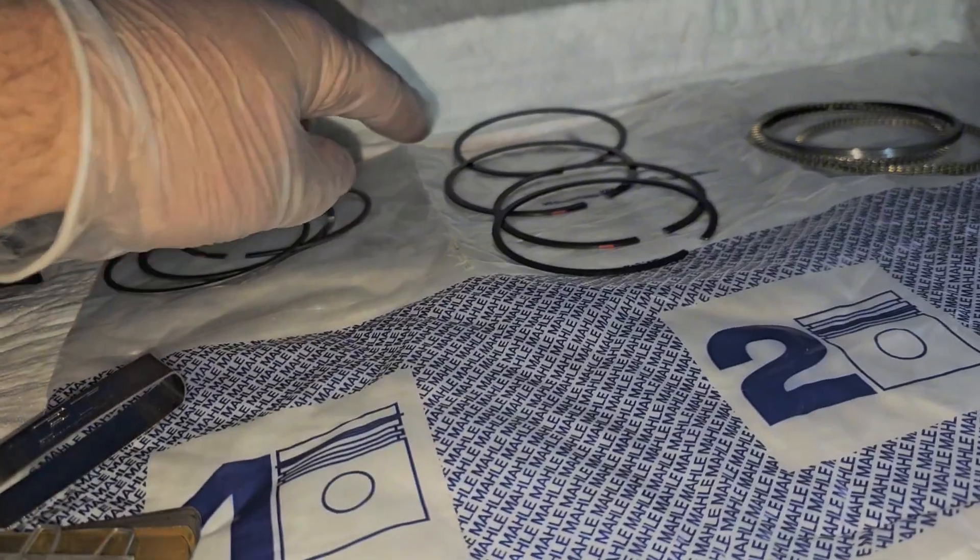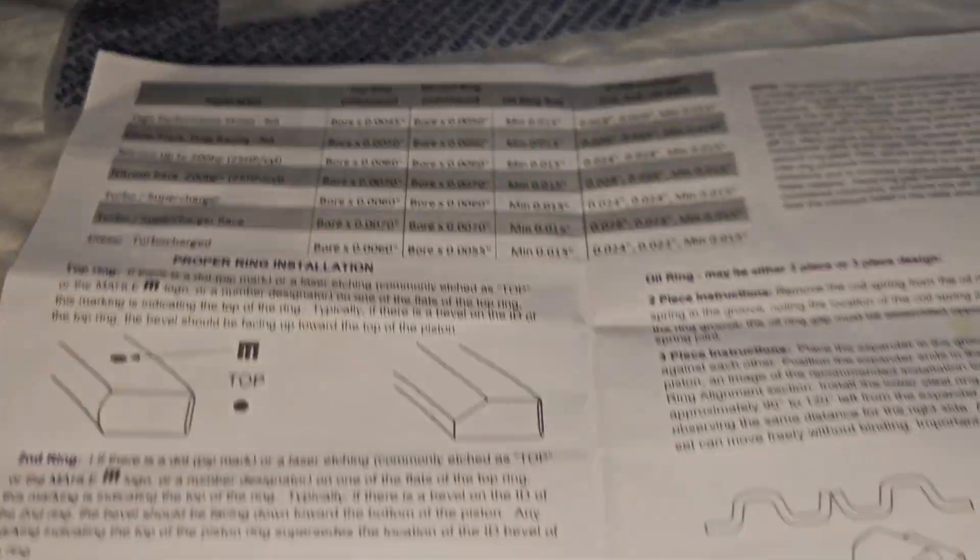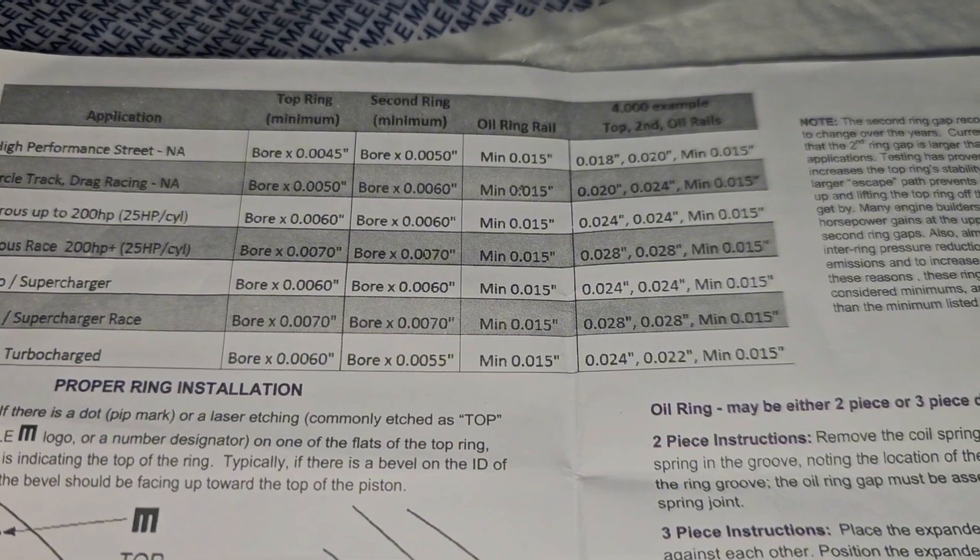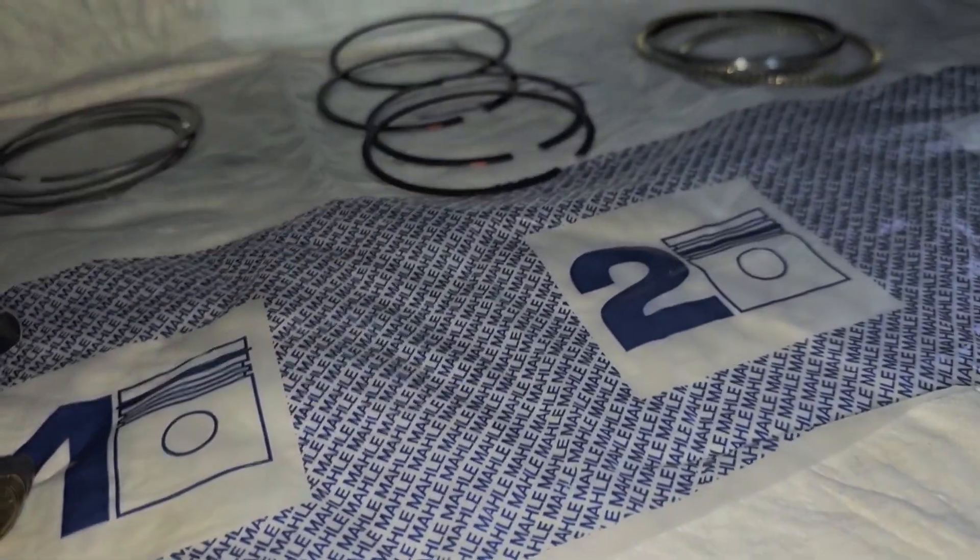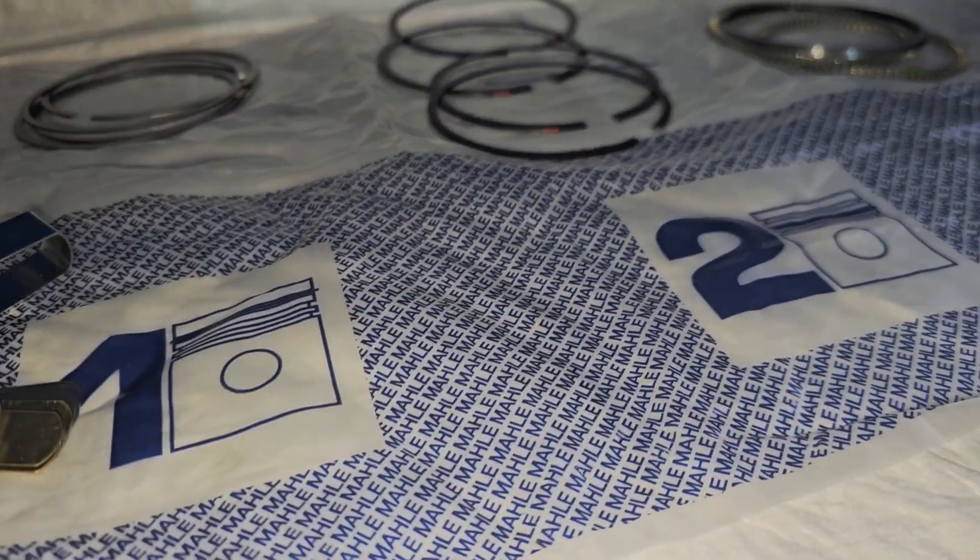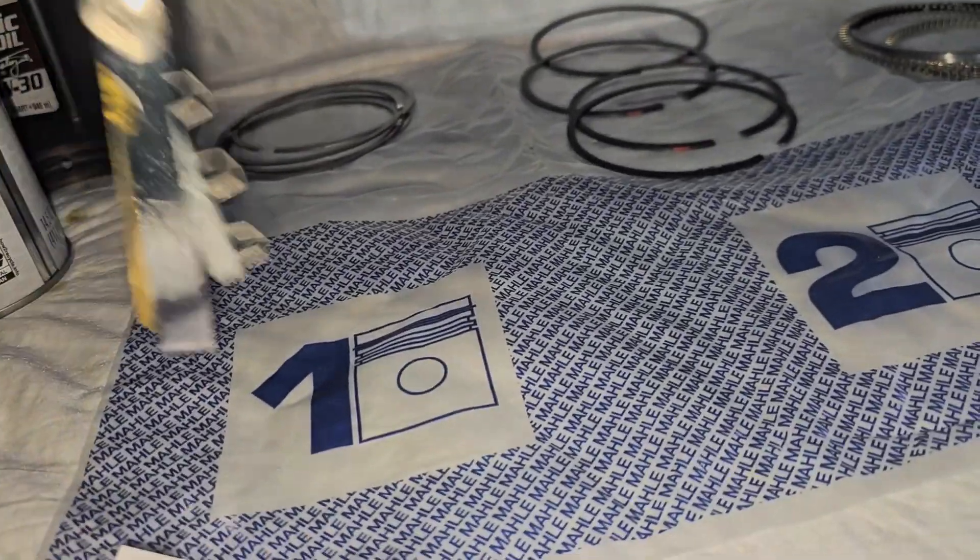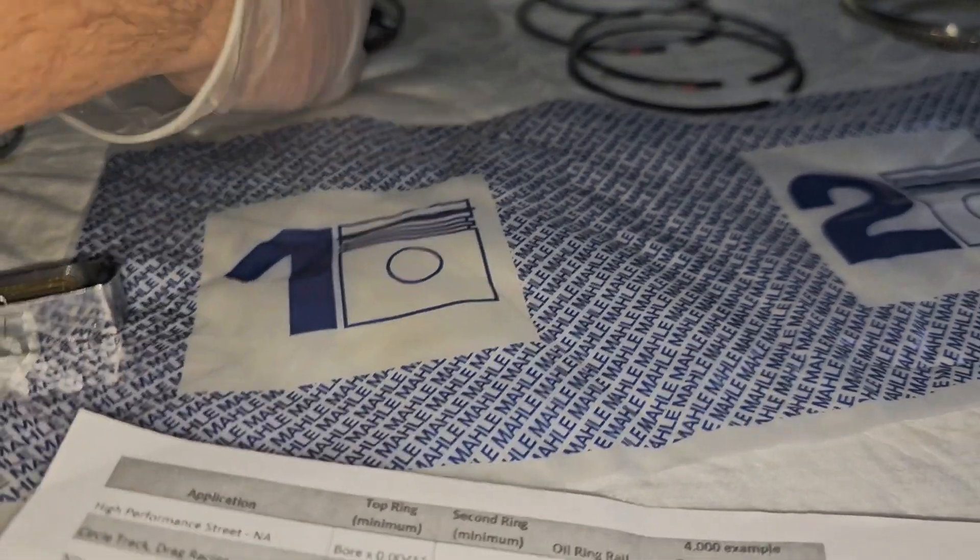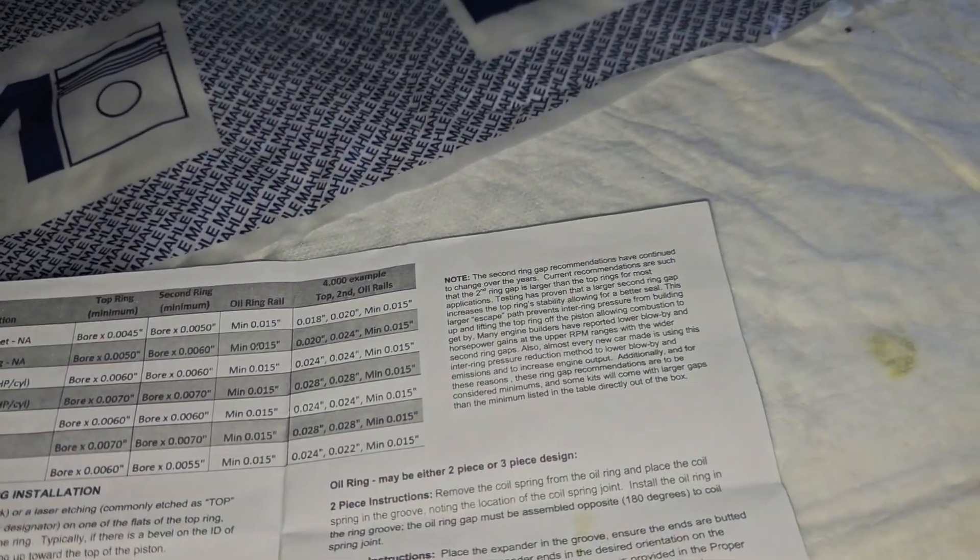After you're done checking your clearances on all these, I did 26 thousandths for this. The turbo race one which is set for 28 and 28, I did 26 and 28, so 28 for the second compression ring. My feeler gauge doesn't go up to 28 but judging by how I did these second ones they were 28. The oil ring obviously you don't need a gap, it's already set at 15 thousandths.